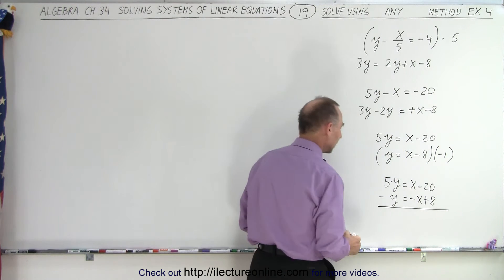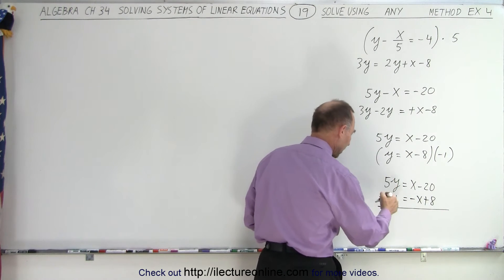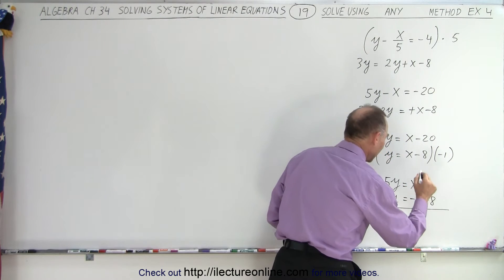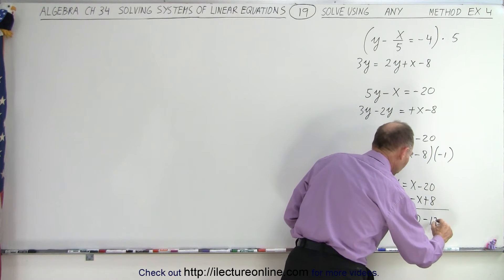Now when I add the two together, notice I get 5y minus y, which is 4y, equals x minus x, that gives me 0, and minus 20 plus 8 gives me minus 12.